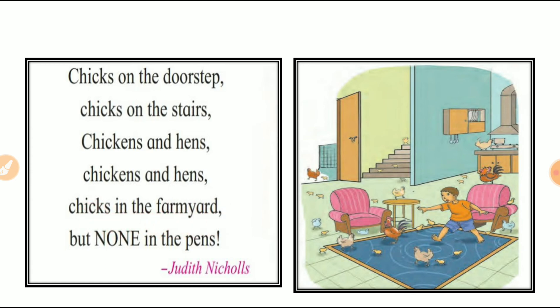Means jow chicken hai. Doorstep, jaysse ki dekha ho, ye doorstep hai. Woha bhaar bhi chalye jathe hai. Stairs, aisai ye, sidihyon ke oopar bhi chad jathe hai. Stairs ke oopar. Chickens and hands. Chickens and hands. Murgi aur murgi ke bachche. Sab jaga ghum te hai. Chicken in the farm jar. Kheto me bhi jathe hai.